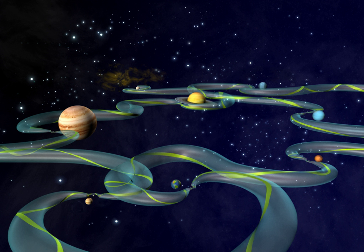The Interplanetary Transport Network is a collection of gravitationally determined pathways through the solar system that require very little energy for an object to follow.